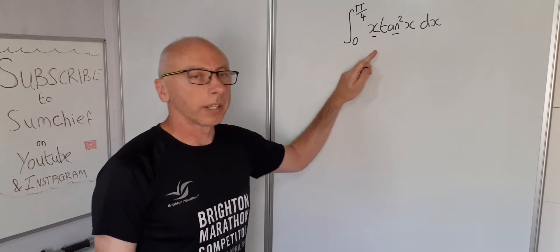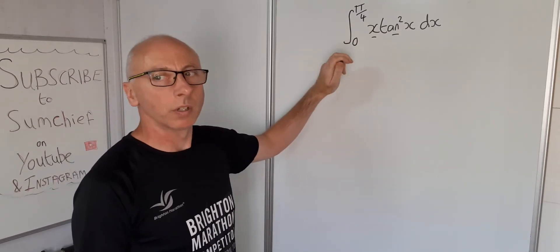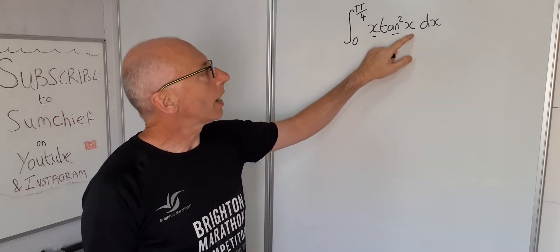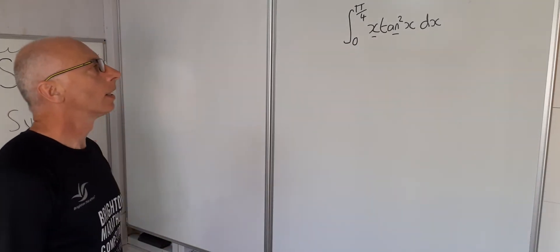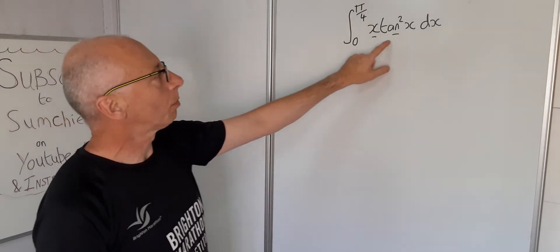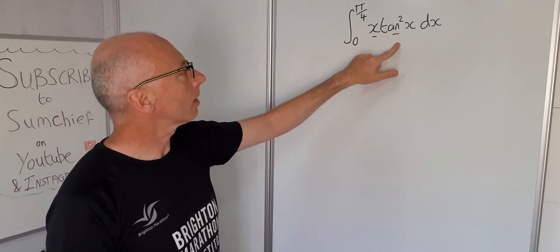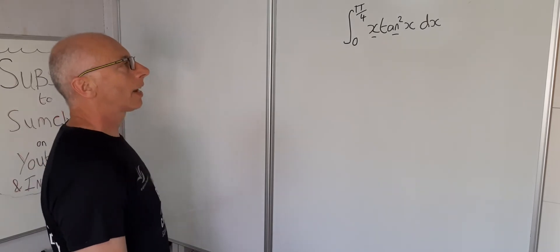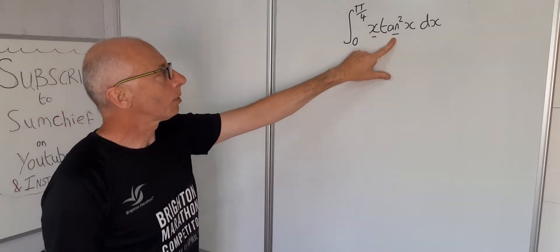We're going to take this definite integral from 0 to pi over 4 of x times tangent squared x with respect to x. It's looking like integration by parts — we've got x and tangent squared x, and we'll use integration by parts.